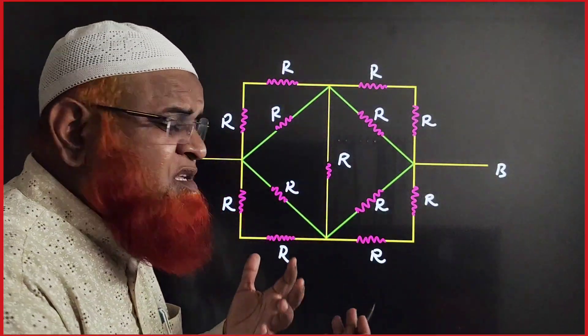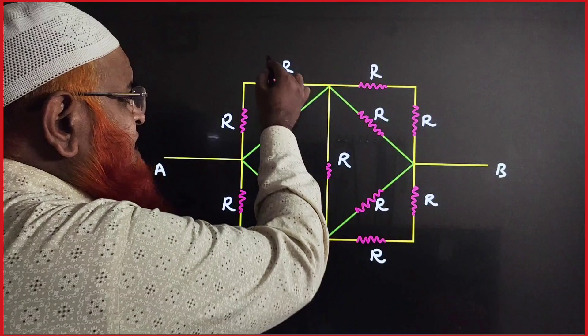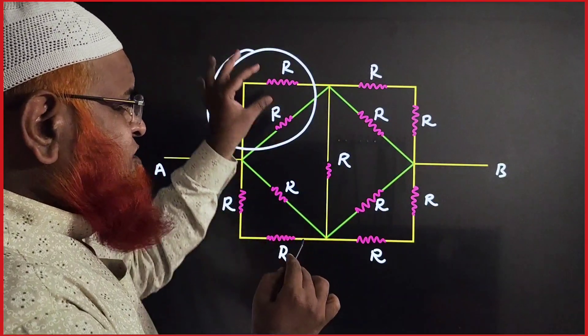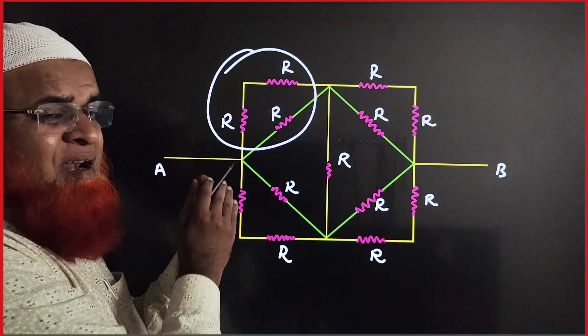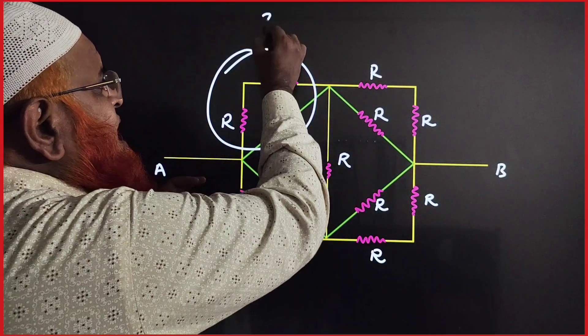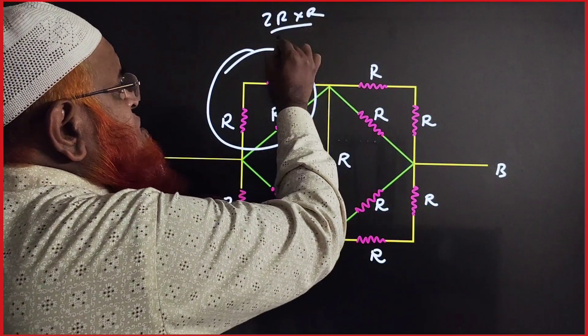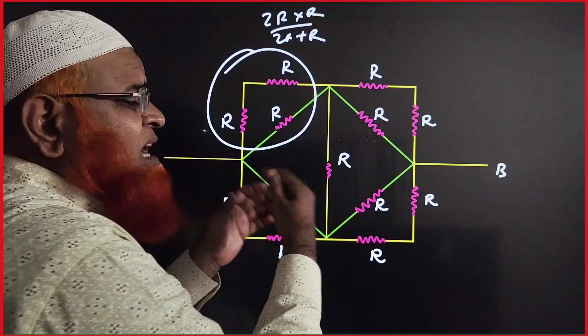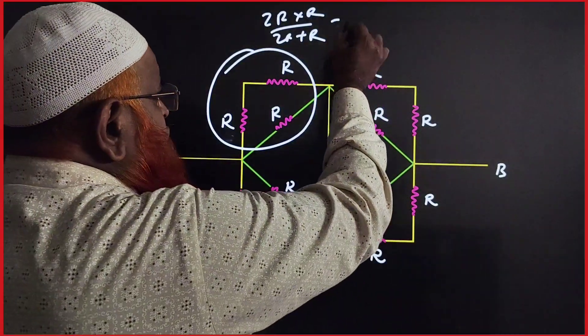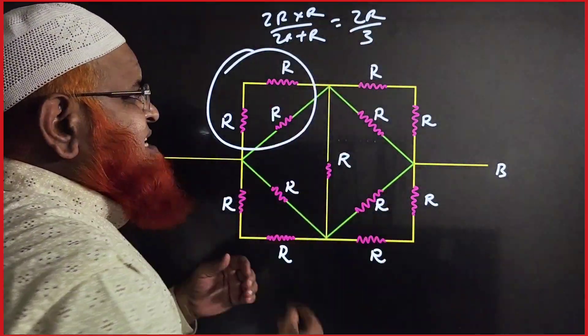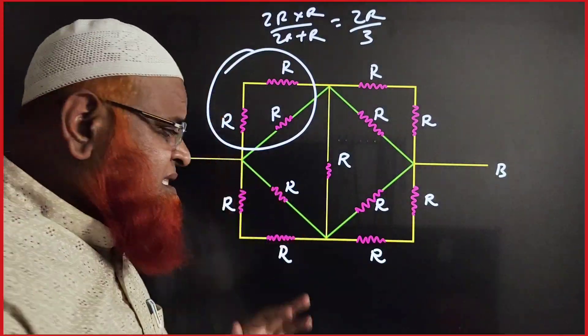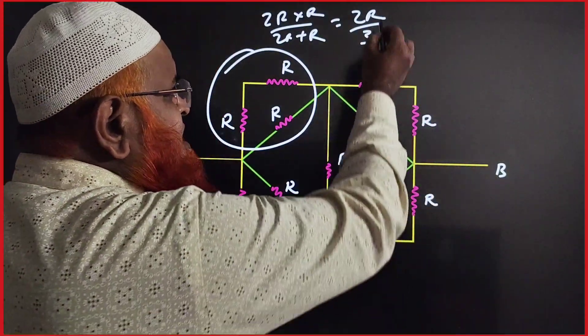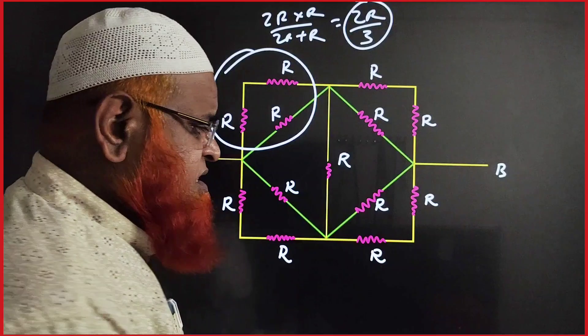Here this is a complex Wheatstone bridge in which you have to find out the net resistance of one corner. 2R is in series and it is in parallel with R. That means 2R into R by 2R plus R. That is R1 R2 by R1 plus R2. You will be getting 2R by 3 as the answer. So any one of the corners is going to be the answer. The resistance across AB is going to be 2R by 3.